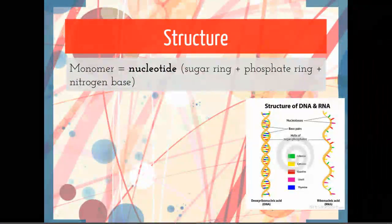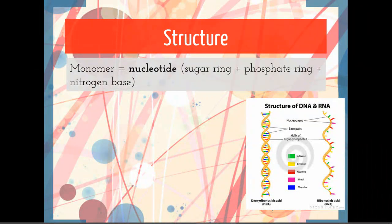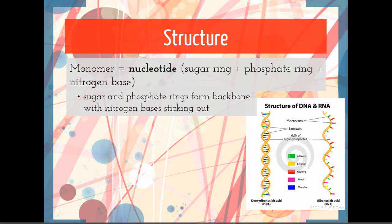The structure of DNA and RNA, the monomer is a nucleotide. The nucleotide is made of three parts: a sugar ring, a phosphate ring, and a nitrogen base ring, and all three of these are attached to each other.